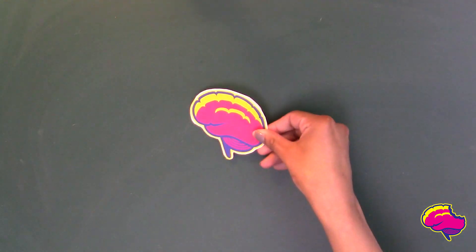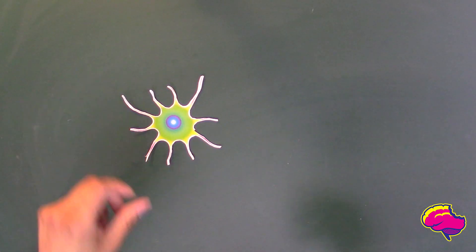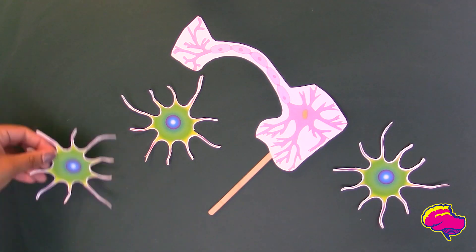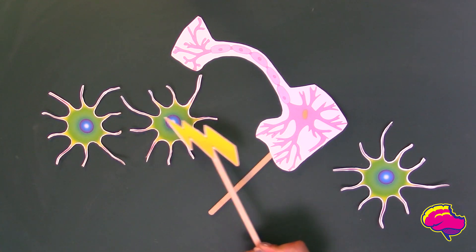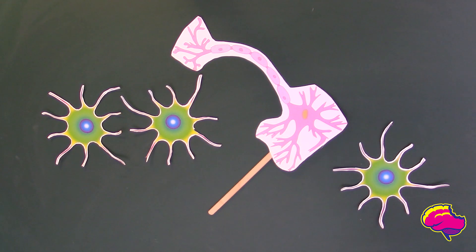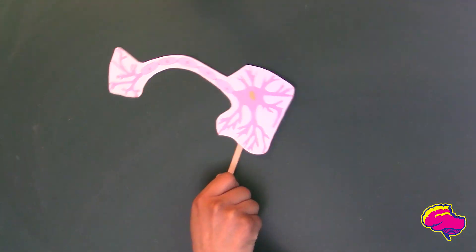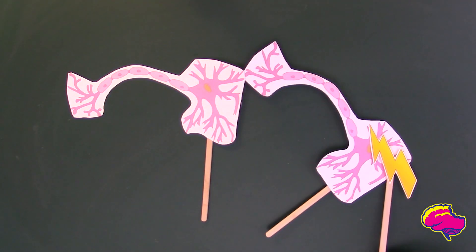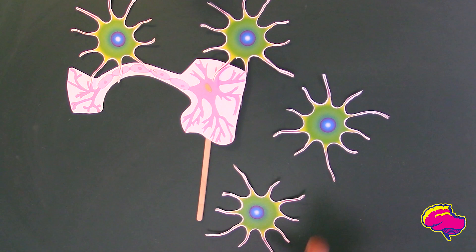Let's start by getting a closer look at the brain. Our brain consists of two types of cells. The majority of those cells are glial cells, which occasionally transmit information to other cells in the brain, but are primarily responsible for insulating and nourishing our second cell type: neurons. Neurons are the communicator cells, while glia are the supporting cells.